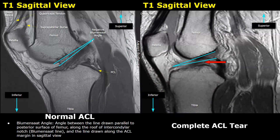The Blumensat line is the line drawn parallel to the posterior surface of the femur along the roof of the intercondylar notch. A second line is drawn along the ACL margin in the sagittal plane. The angle between these two lines is the Blumensat angle.